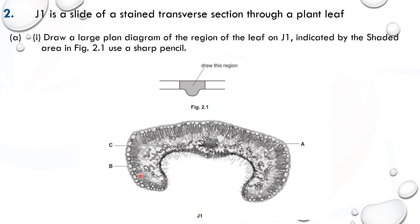This is J1. The region they want you to draw must show the midrib. They are giving instruction to draw this specific region. If you interpret it correctly, we are supposed to draw somewhere here - this is our J1, right here. Draw that region.